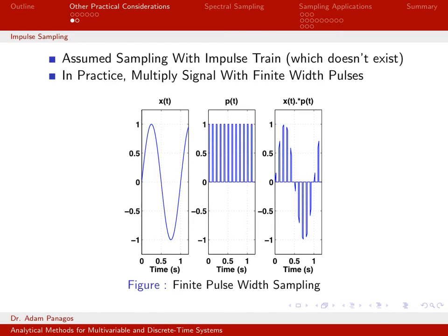So in practice, what would we probably try to do if we wanted to kind of emulate this sampling behavior? We would end up using something more like this middle picture right here. If I wanted to sample this continuous time signal, x of t,